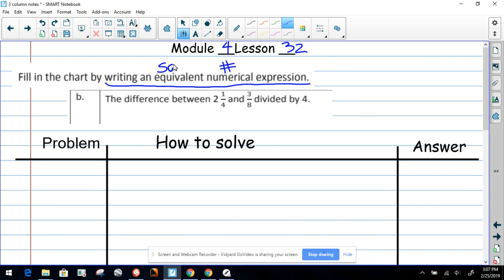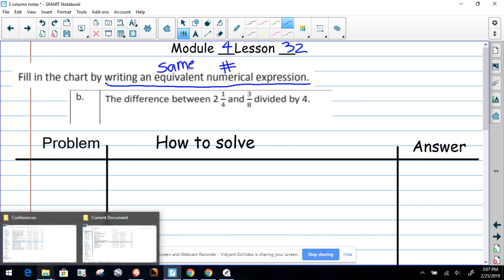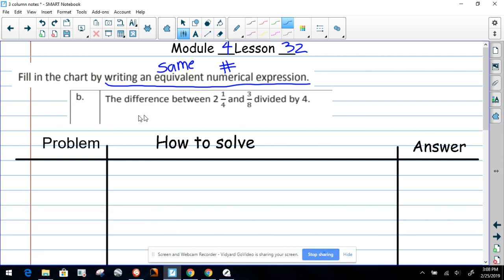Equivalent means it has to be the same—it has to have the same value. So here is our written expression: the difference between—okay, difference means subtraction—between these two numbers.